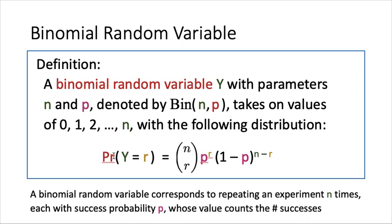The probability that Y is equal to the value r, where r can be an integer between 0, 1, 2, 3, up to n, is equal to the binomial term n choose r, multiplied by p to the power r, multiplied by 1 minus p to the power n minus r. We call this a binomial random variable because there is a binomial term inside.